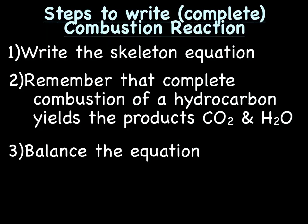Let's go over the steps to write or complete combustion reactions. Out of all the reactions we're going to do, this one takes the least amount of thinking, although unfortunately they're the most difficult to balance. You write the skeleton equation: if it's the complete combustion of some hydrocarbon, it's going to be the hydrocarbon plus oxygen — those are the reactants every single time — and you're going to yield, arrow, the two products: carbon dioxide and water. Every time, the reactants are hydrocarbon plus oxygen, and the products are always carbon dioxide and water.